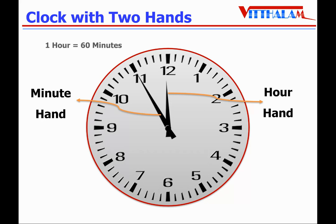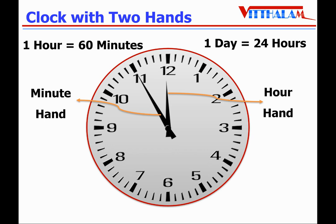Hence, one hour equals 60 minutes. The hour hand moves from one number to the next number in one hour, and the hour hand takes 12 hours to complete one round. It takes two full rounds of the clock in a day, and therefore one day equals 24 hours.